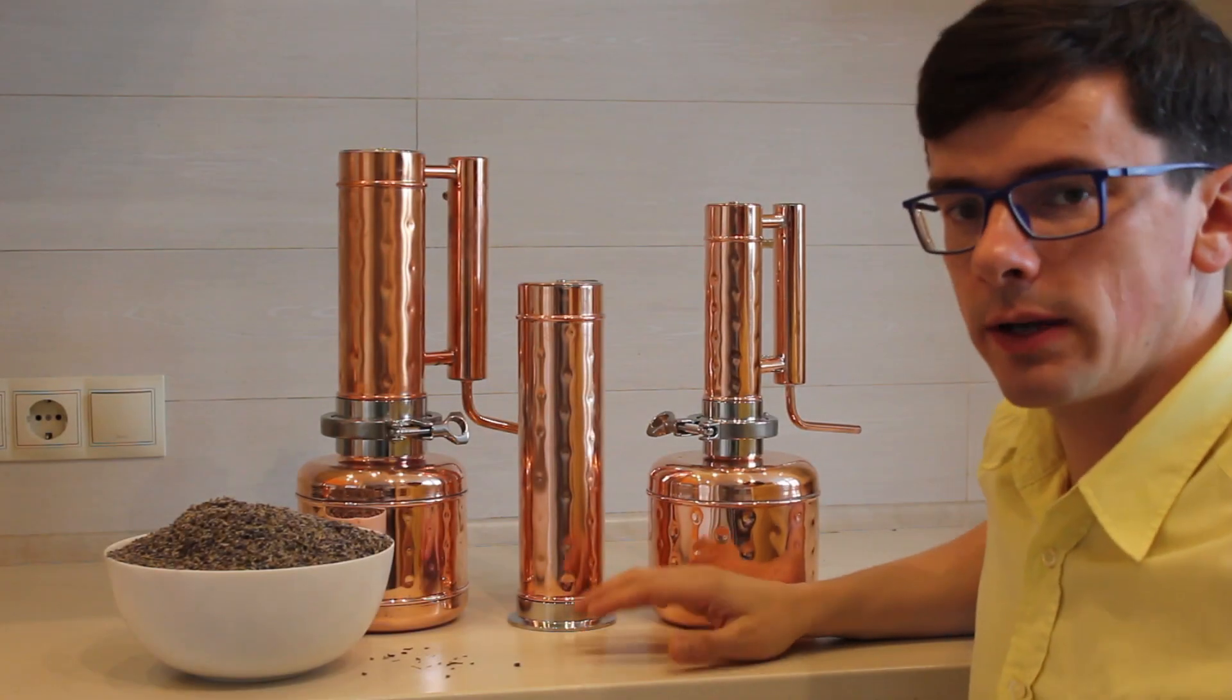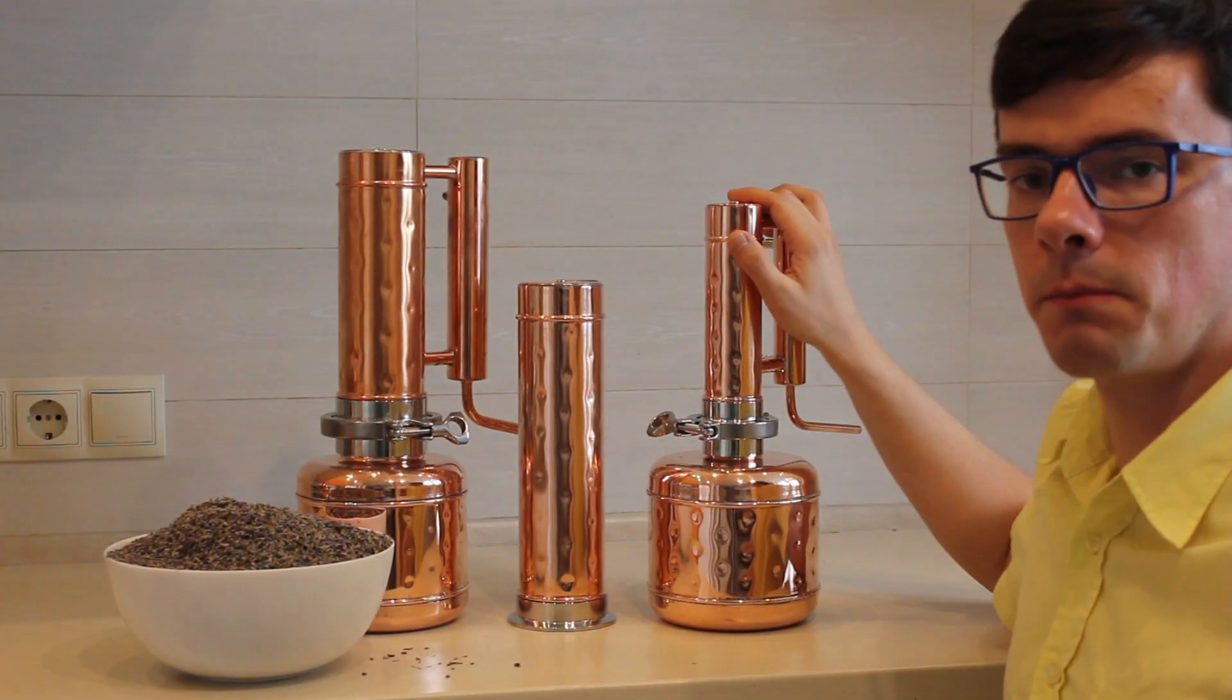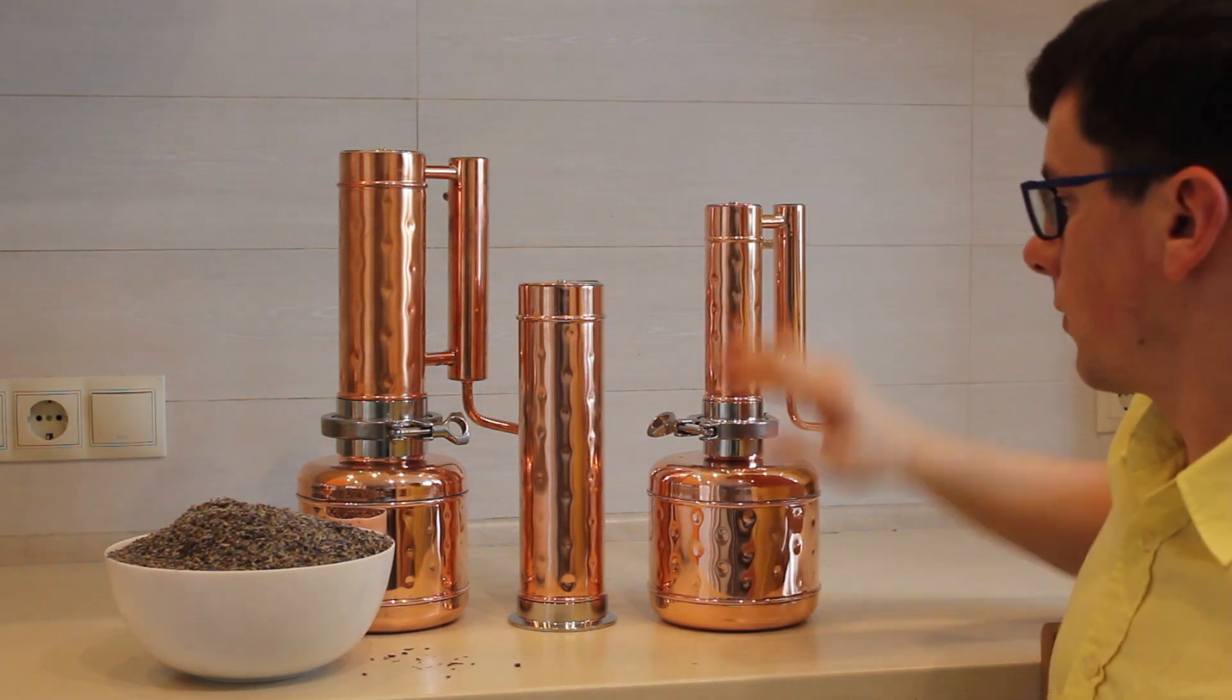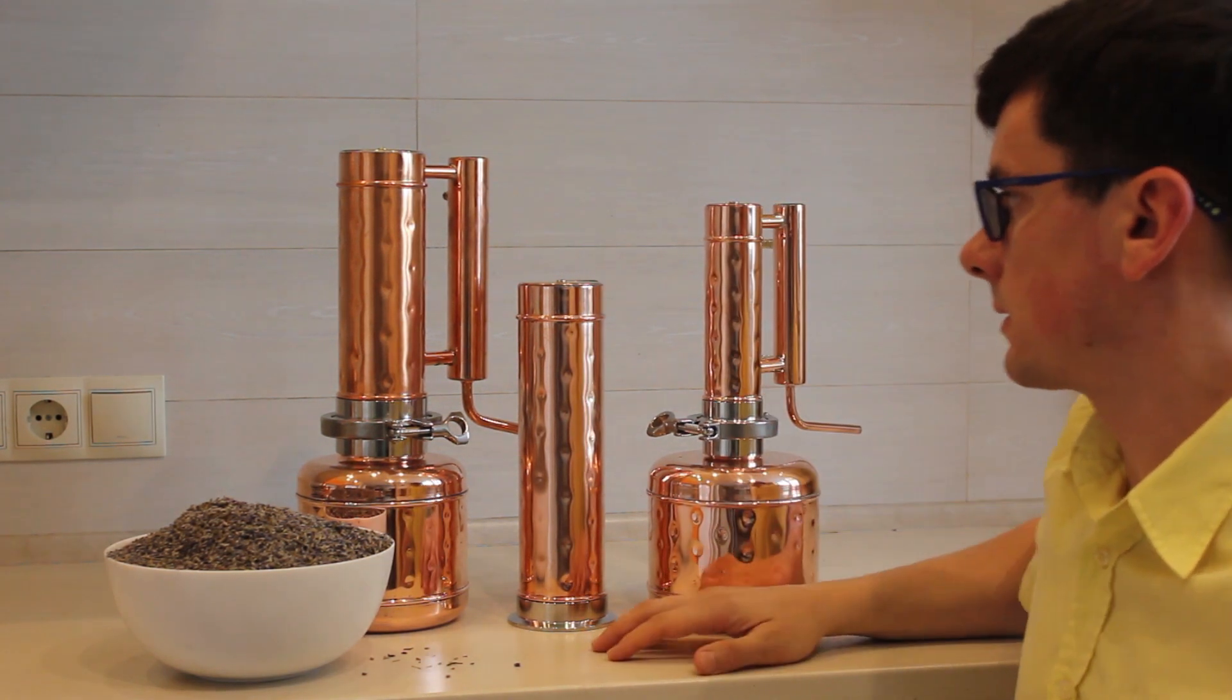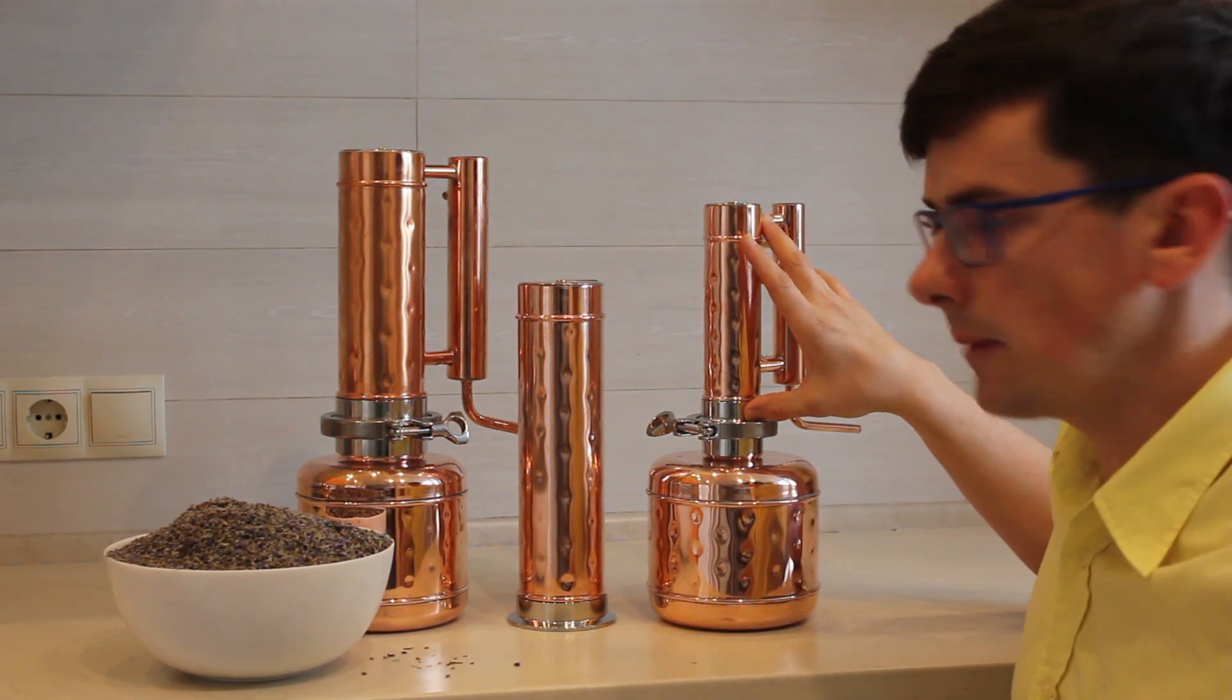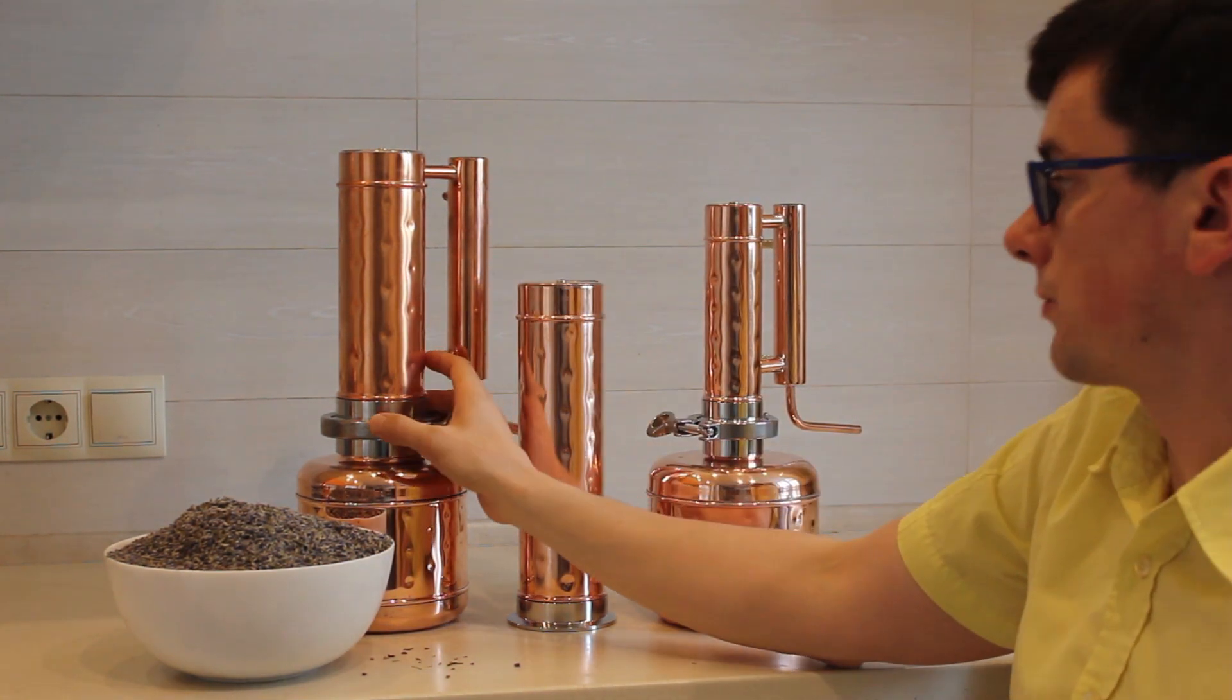Hello everyone! Today we have two stills from our manufacturer. Both of them have a two-liter pot, but the size of the column is different. The smaller one has a two-inch column and the bigger one has a three-inch column.